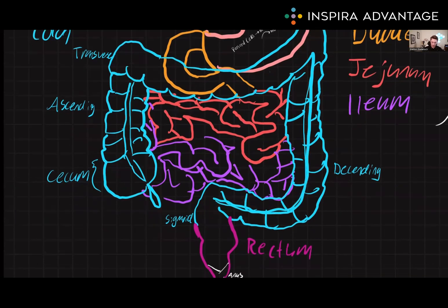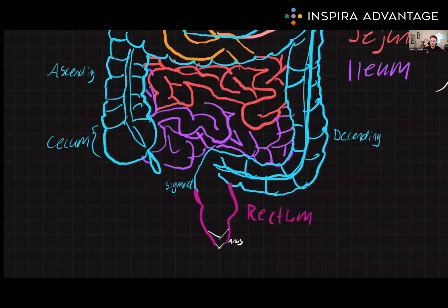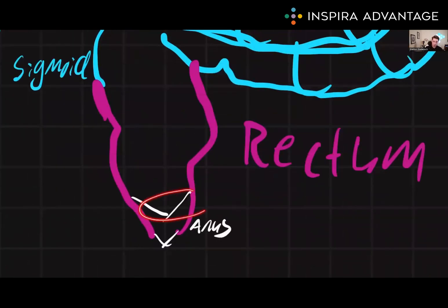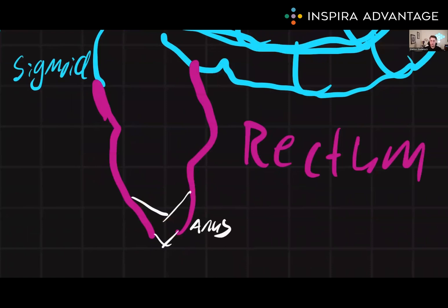Finally, the rectum is the last segment of the large intestine, and it connects the colon to the anus. The rectum is a short, straight tube about 12 centimeters long, and it stores feces before they are eliminated through the anus. The anus is the final opening of the digestive tract, surrounded by internal and external sphincter muscles, which help control the elimination of feces.